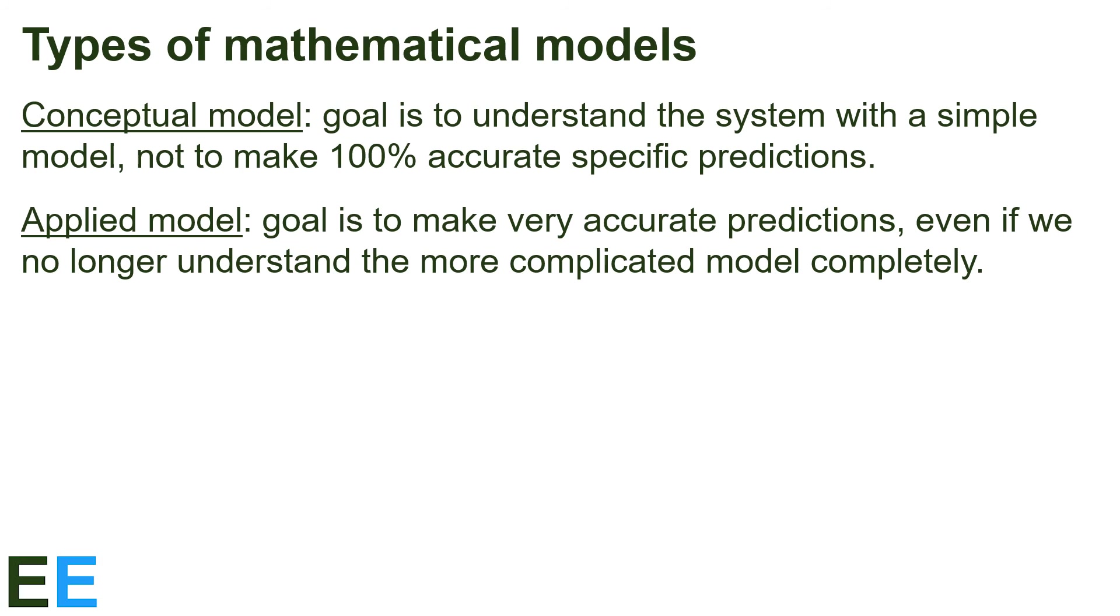The model we've been looking at is obviously a conceptual model, since it didn't include lots of other important things like other species, spatial effects, climate variability, food resource variation, and any number of other things that are important in the real world. Nevertheless, it is useful for helping us understand the life history strategies that different organisms employ.